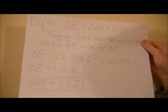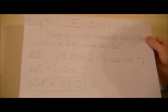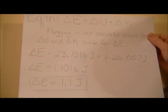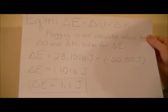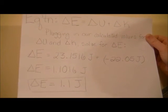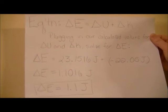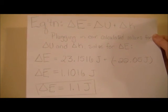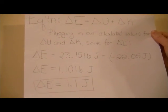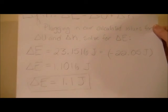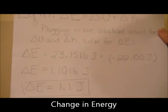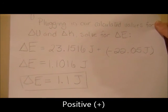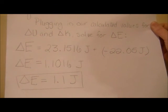Now that we have values for both potential and kinetic energy, we can solve for total energy, which is equal to the non-conservative work. Plugging in our calculated values for potential and kinetic energy, we can solve for the total energy. Total energy is approximately equal to negative 1.1 joules.